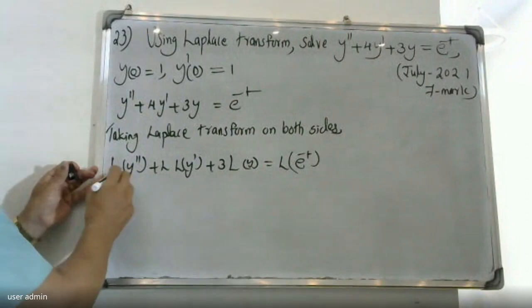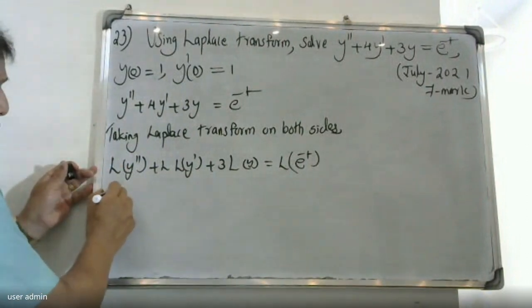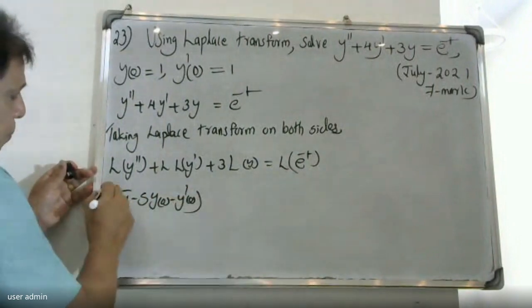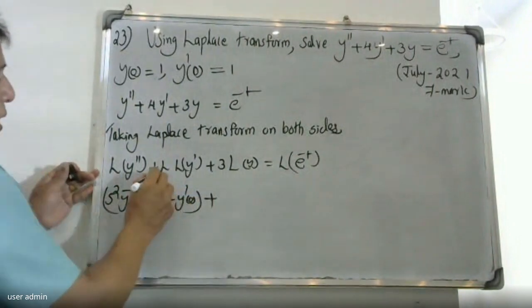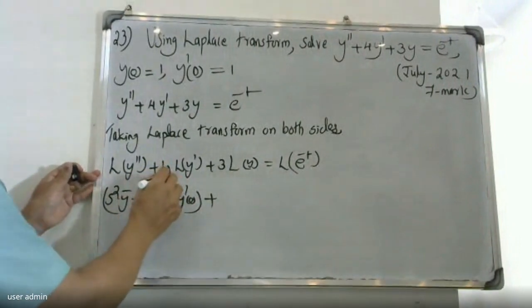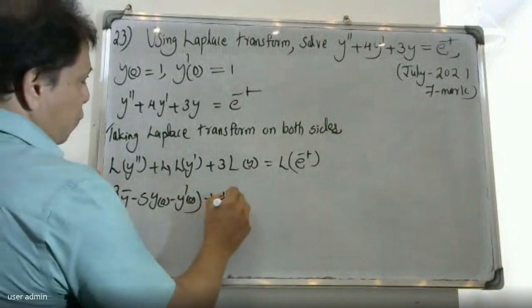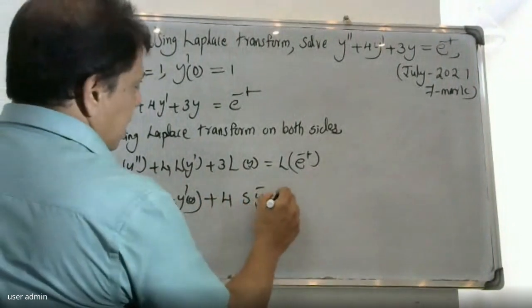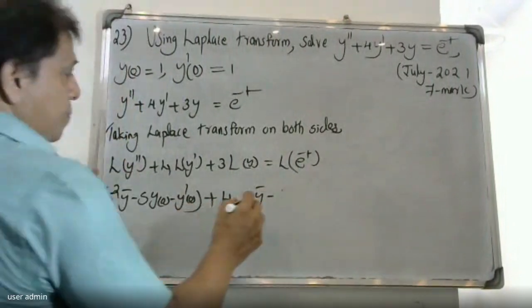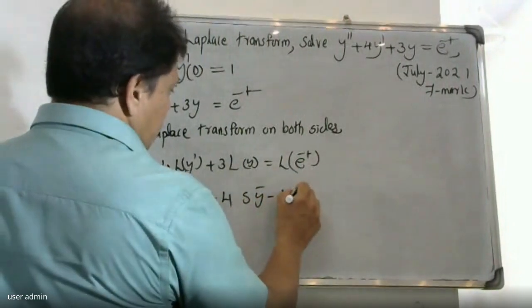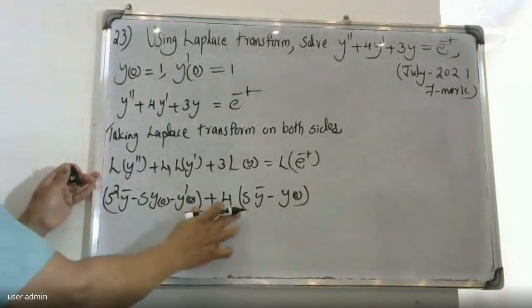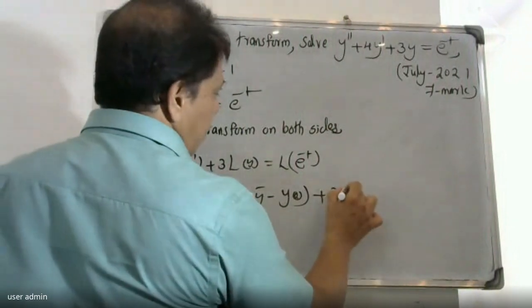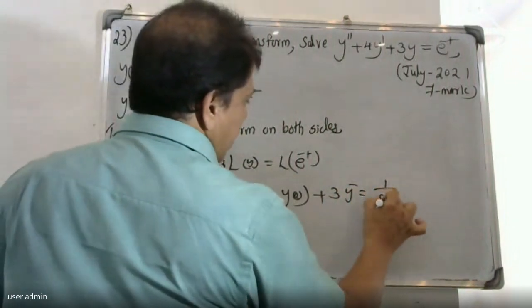For L{y''}, we apply the formula: s²·ȳ - s·y(0) - y'(0), plus 3·ȳ equals 1/(s+1).